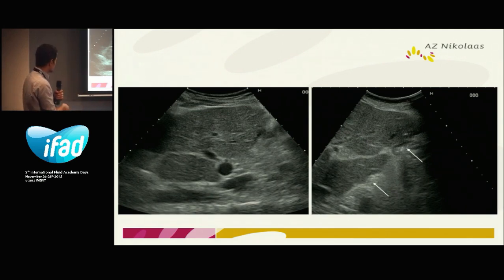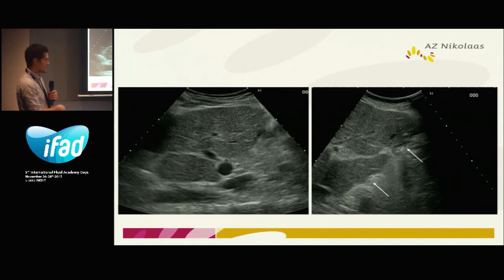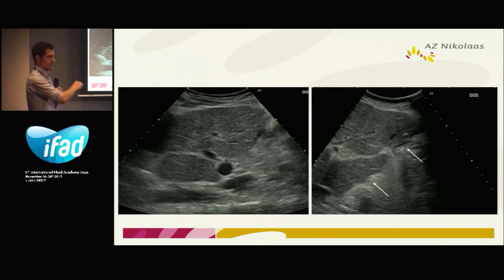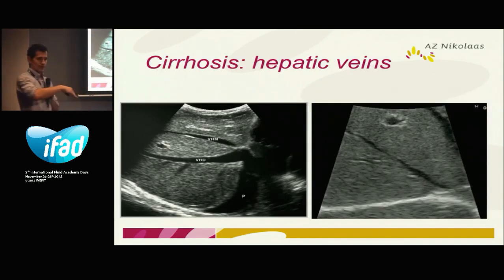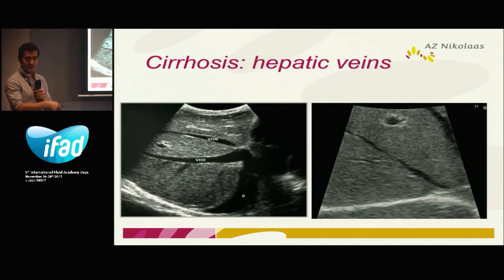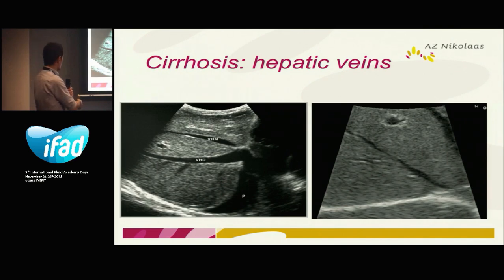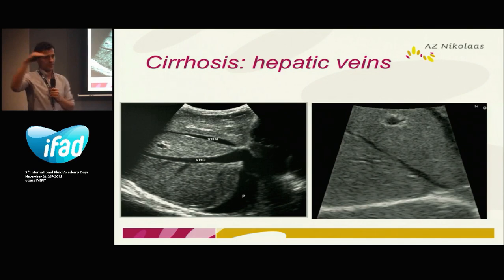When ascites disappears it's more difficult, but you can still appreciate nodularity in this patient and here as well. Normally this should be a sharp edge — here the same nodularity of the liver border, this is cirrhosis. This nodularity is not only on the outside; it also happens on the inside. Remember the hepatic veins in a normal patient — this is what hepatic veins look like in a cirrhotic patient, so the nodularity from outside is also visible inside the liver.